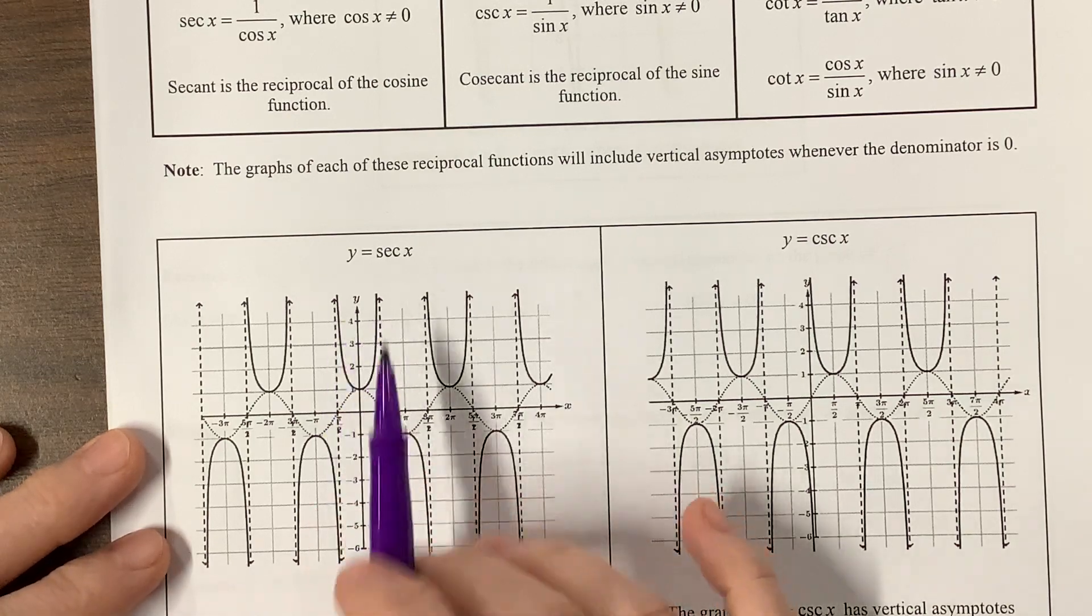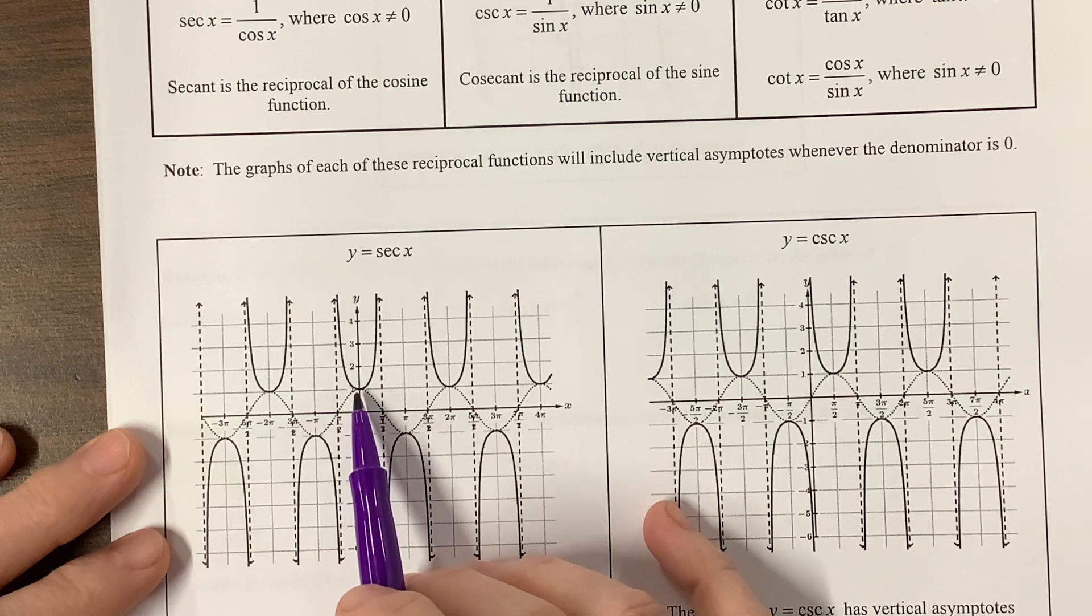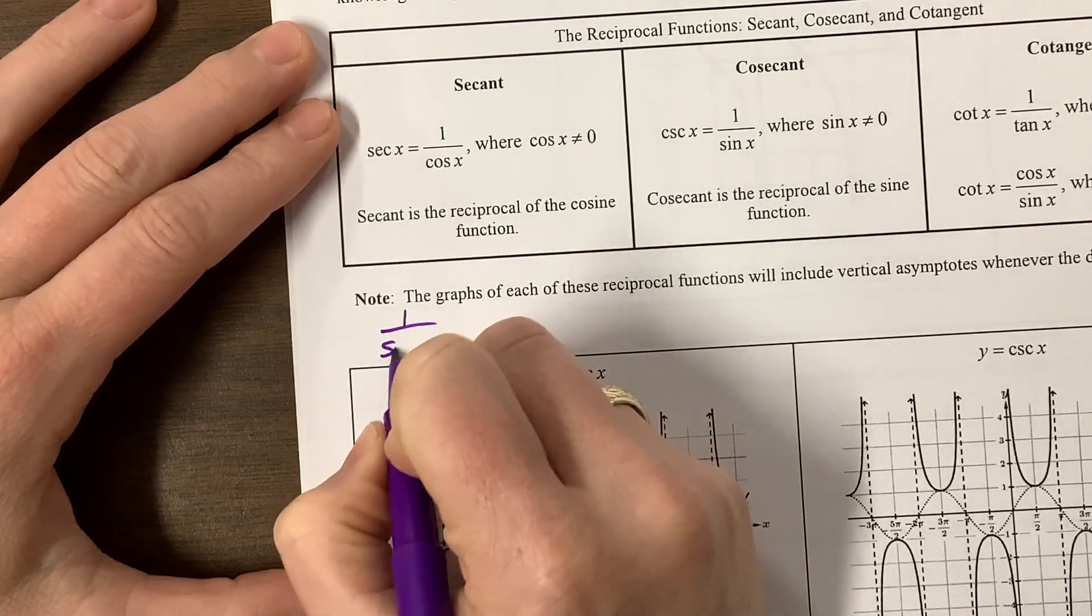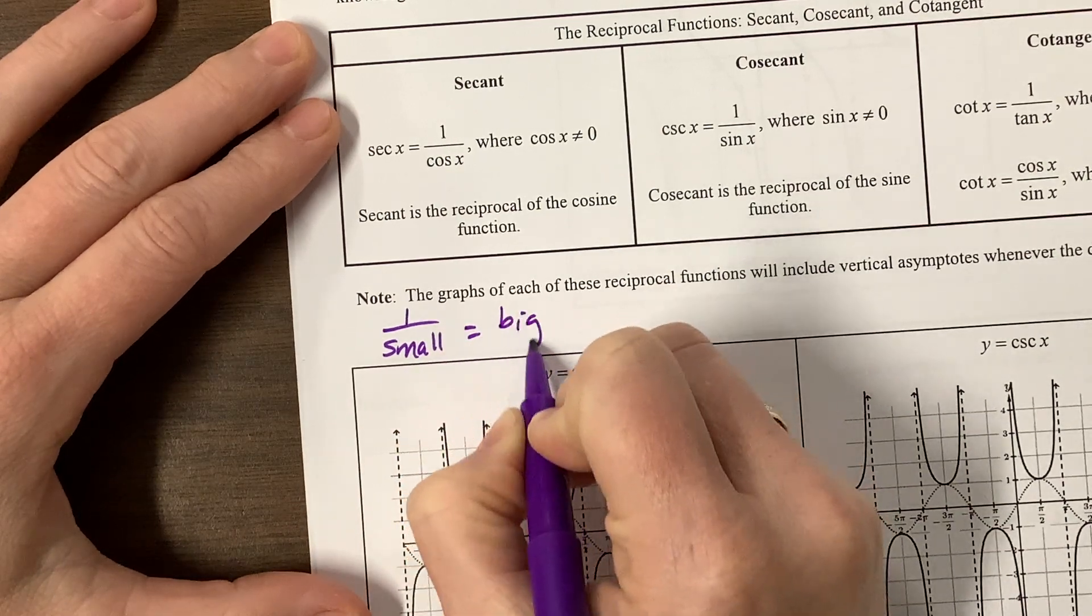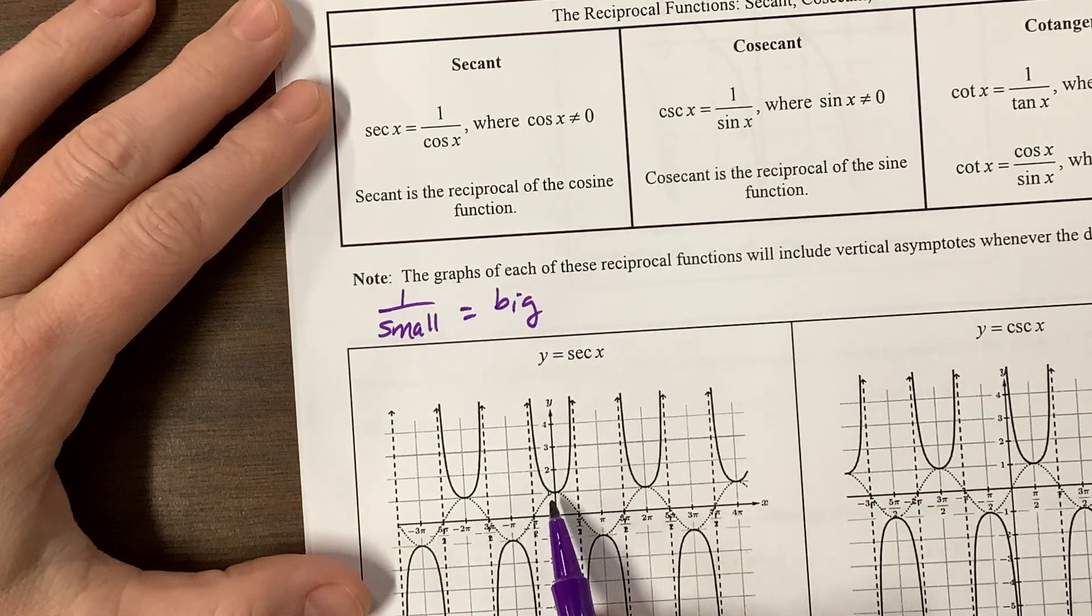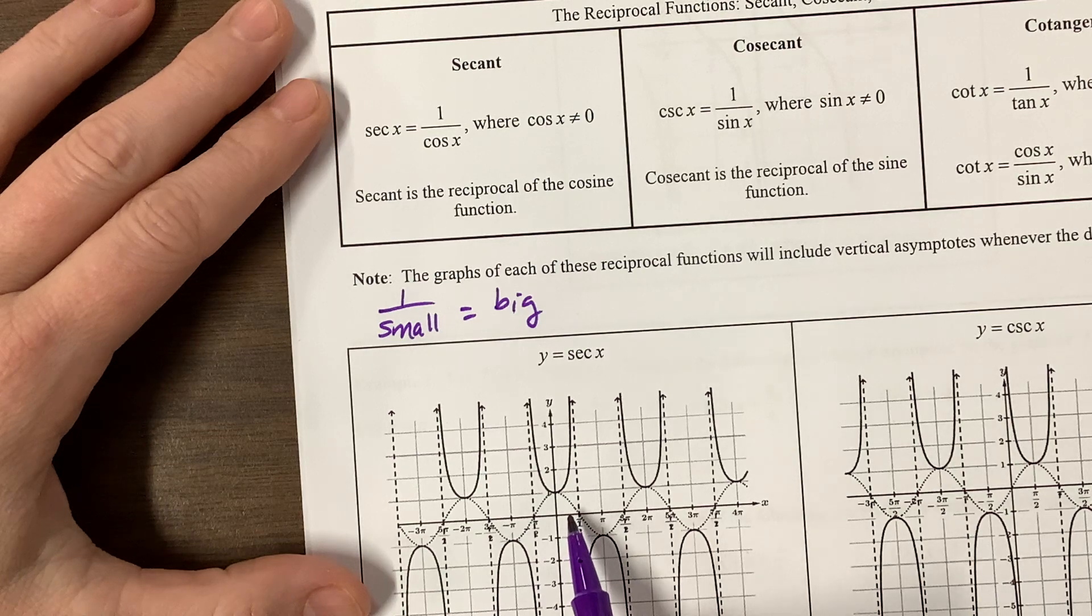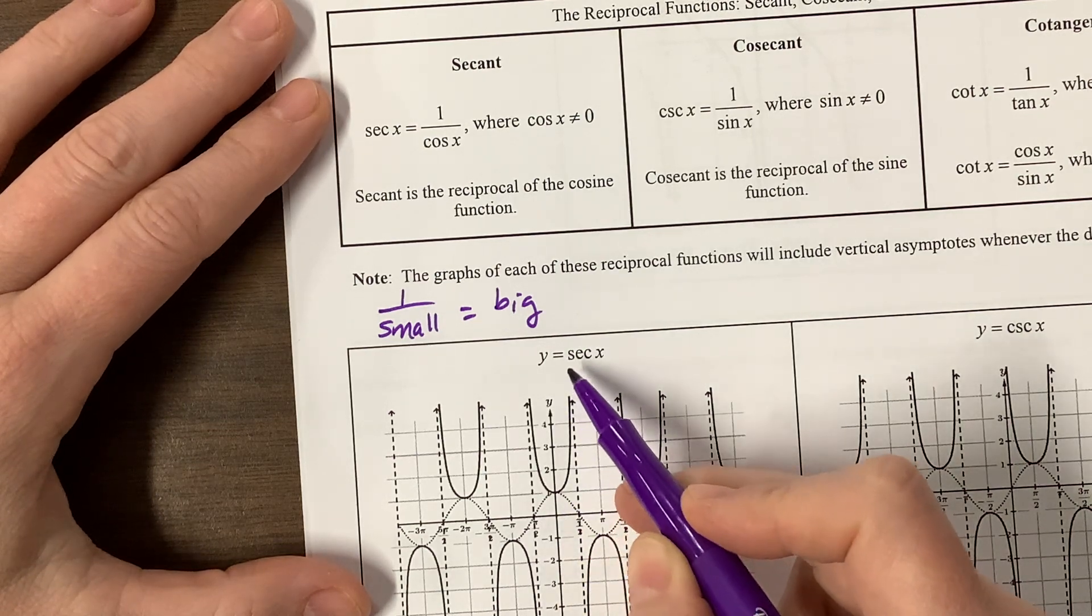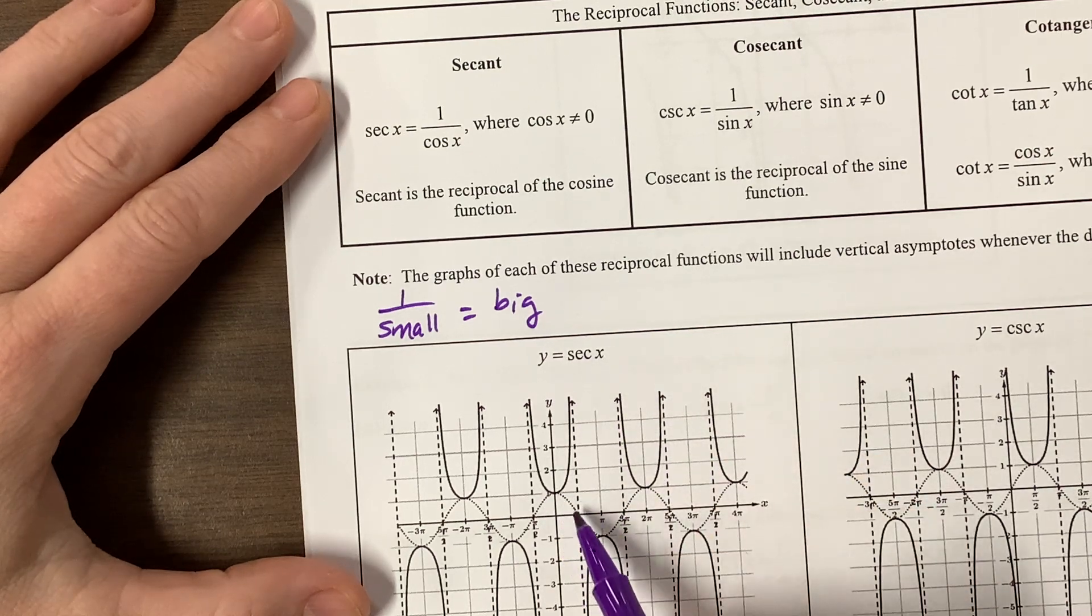Since it's the reciprocal of cosine, when cosine gets, here's what I like to write: 1 over something very, very small gives us something very, very big. As cosine is getting closer and closer to 0, it's getting smaller and smaller. The reciprocal of something really small gets really, really big. That's why secant will shoot off to infinity as cosine gets closer to 0.